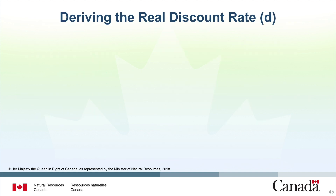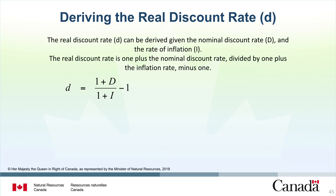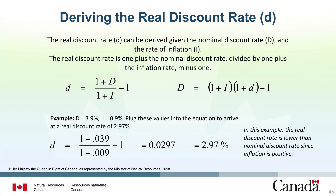Let's discuss how to derive the real discount rate. The formula for calculating the real discount rate uses nominal discount rate D and the rate of general inflation I. The real discount rate d is: 1 plus the nominal discount rate divided by 1 plus the inflation rate, minus 1. You can transpose the same formula to solve for the nominal discount rate, which is 1 plus the general inflation rate times 1 plus the real discount rate, minus 1. For example, assume the nominal discount rate is 3.9% and the inflation rate is 0.9%. Plugging these values into the equation gives a real discount rate of 2.97%. In this example, the real discount rate is lower than the nominal discount rate since inflation is positive.